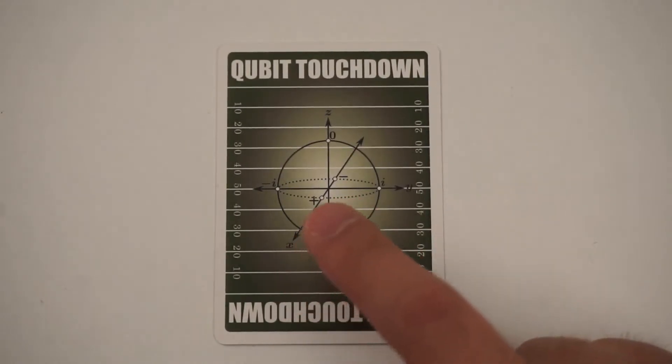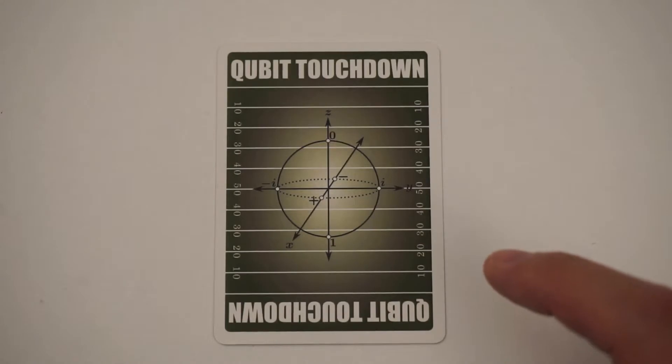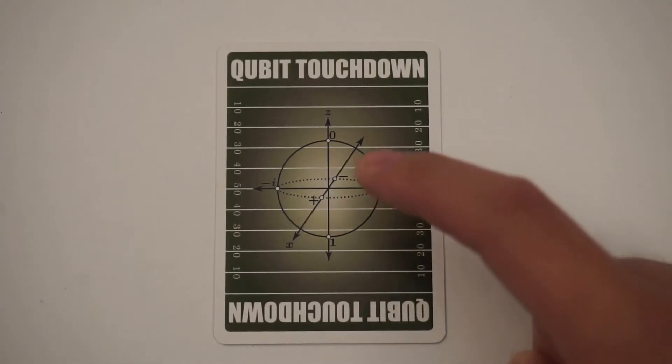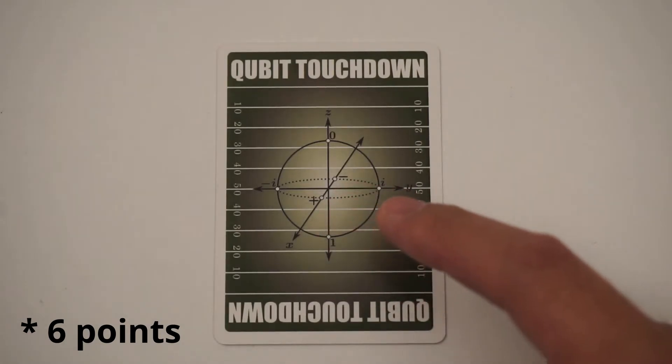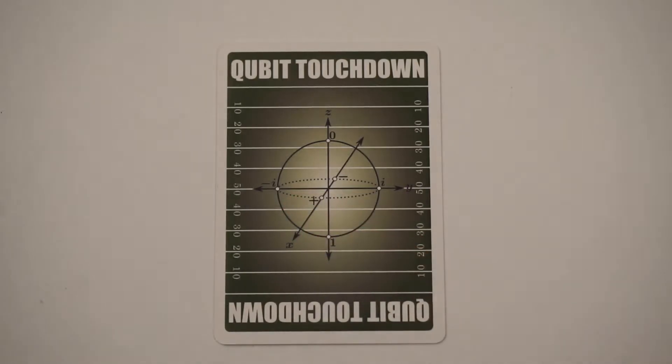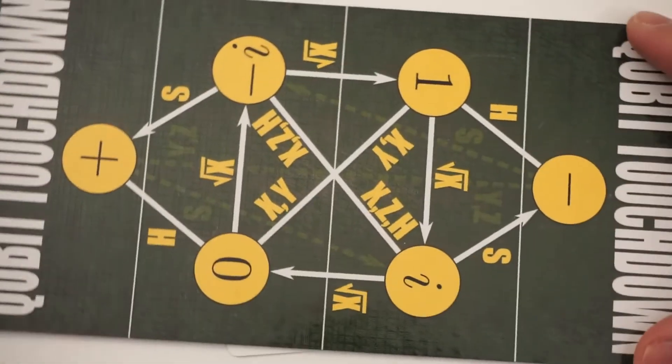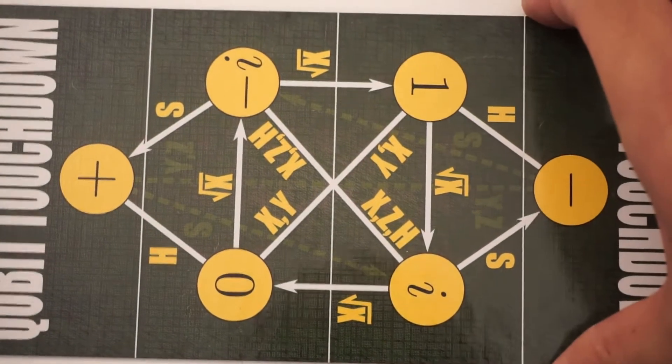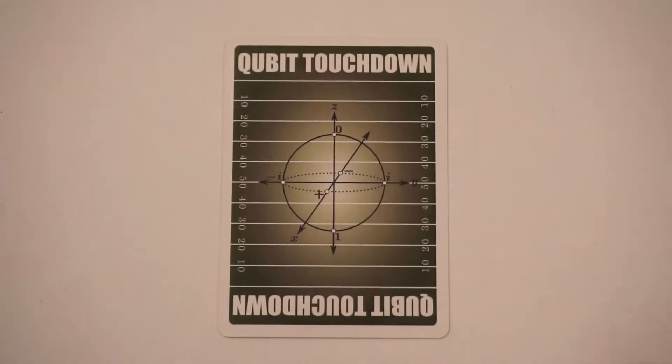So you see that the x-axis is coming out of the card. The y-axis points to the right and the z-axis points up. And then on the axes are three points. There's zero, one, plus, minus, I, and minus I. And you'll recognize these as the six different positions on the Qubit Touchdown board.